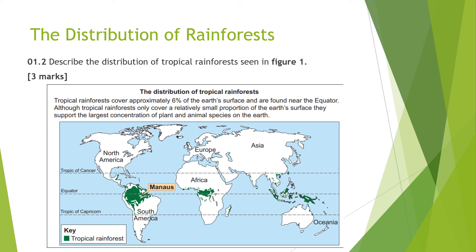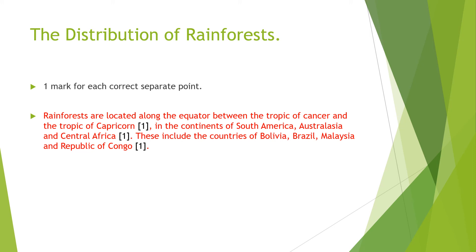Let's have a quick look at a model answer for that question. You'd have got one mark for each correct separate point. In the model answer shown in red there are three separate points: rainforests are located along the equator between the Tropic of Cancer and the Tropic of Capricorn — that's your first mark. In the continents of South America, Australasia and Central Africa — that is your second mark. And then finally, this writer has given some examples of countries within those continents such as Bolivia, Brazil, Malaysia and the Republic of Congo — third mark. Three separate points, three marks in total.